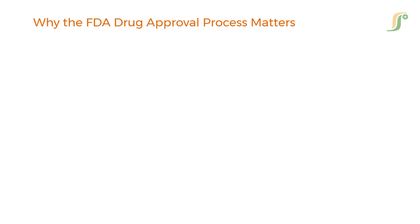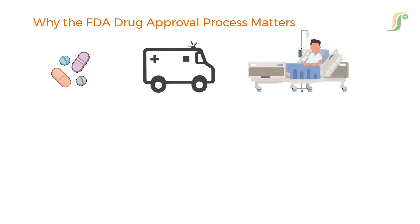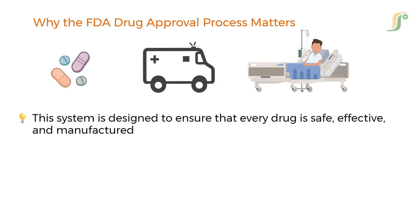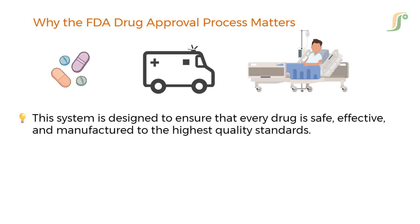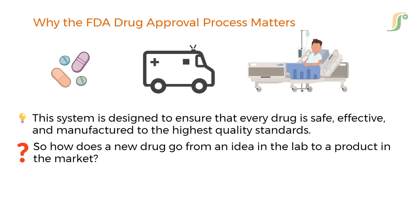Why the FDA Drug Approval Process Matters: Before a medicine can reach a pharmacy shelf or hospital bed, it must first pass through one of the most stringent review processes in the world — the FDA Drug Approval Process. This system is designed to ensure that every drug is safe, effective, and manufactured to the highest quality standards. So how does a new drug go from an idea in the lab to a product in the market? Let's break it down.